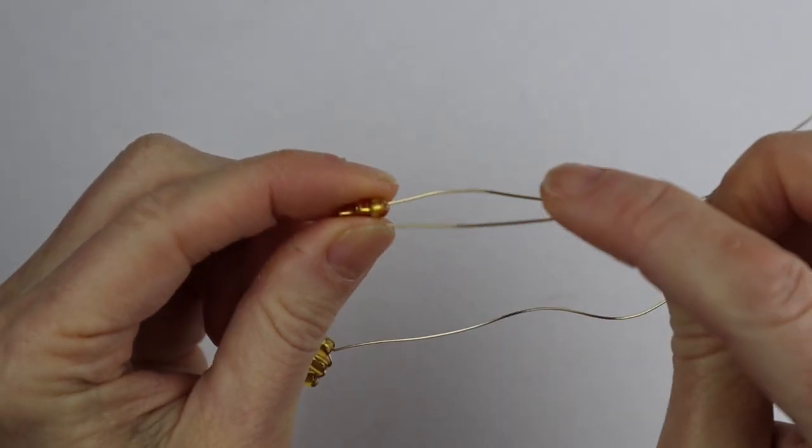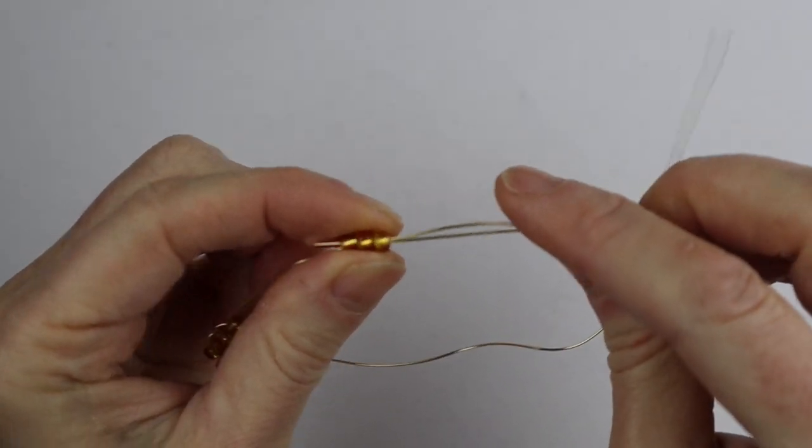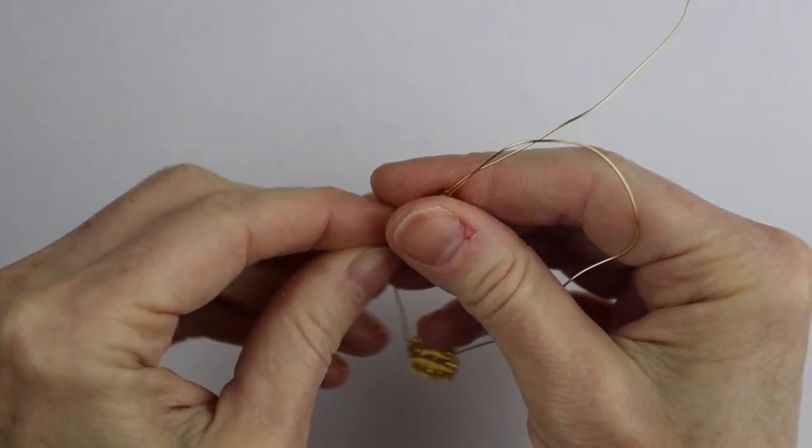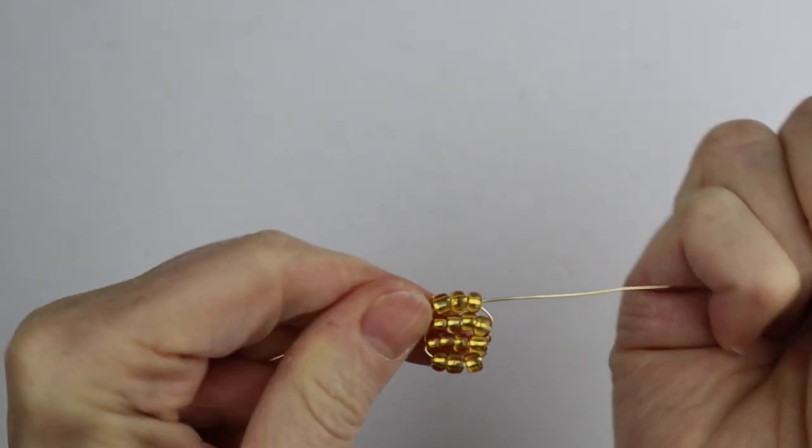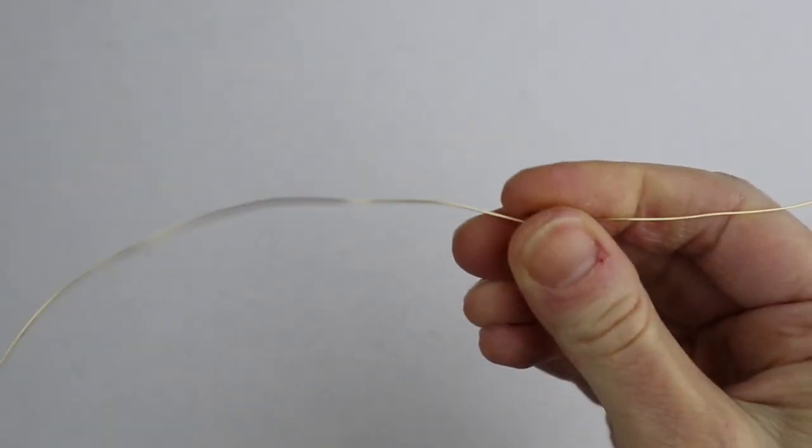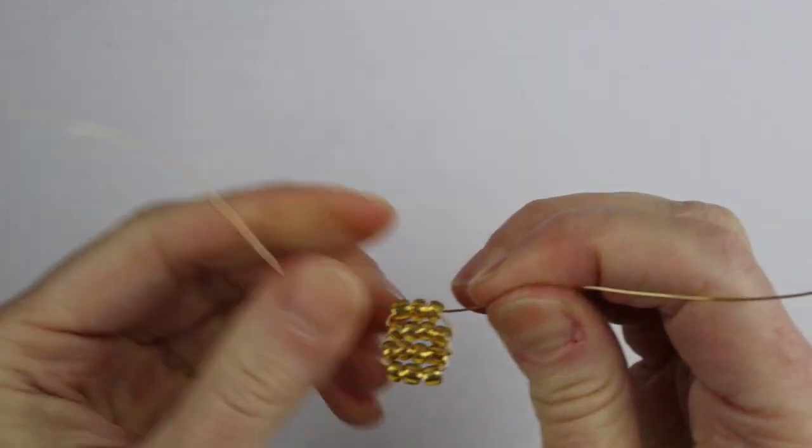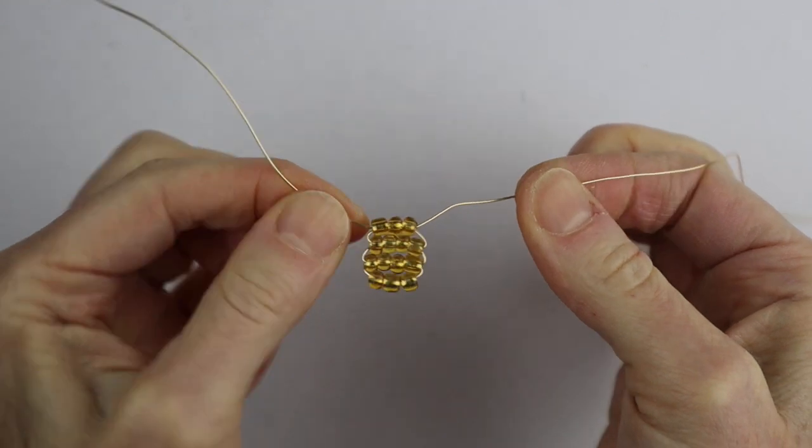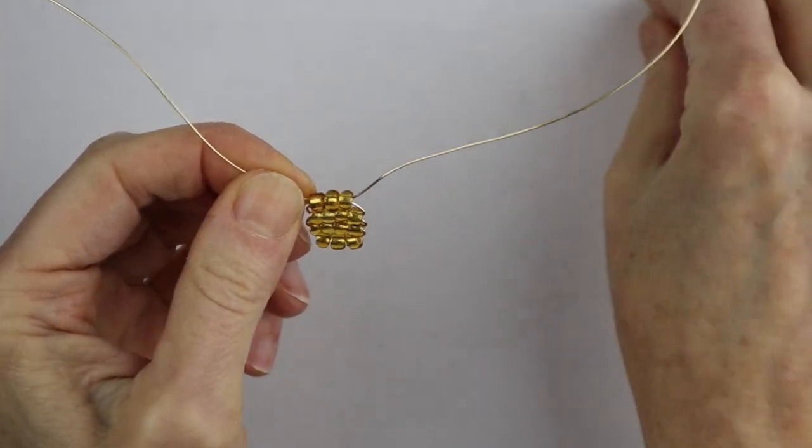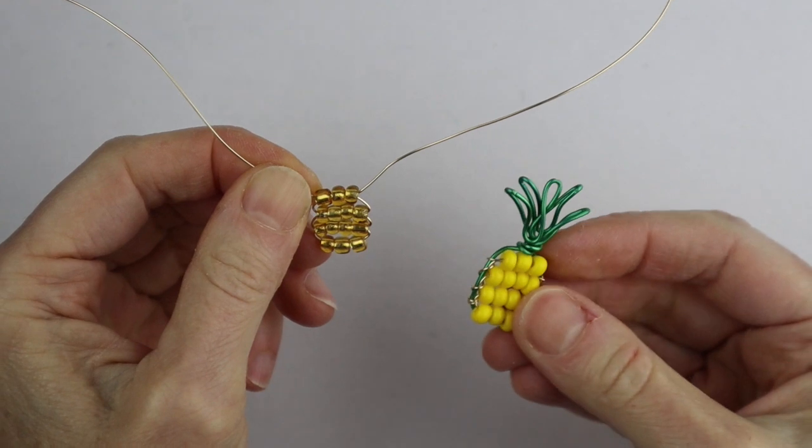We have our last row of three and we'll put the other wire back through there and pull it. I've cut this wire way too long - I cut it 18 inches but really you probably only need about 10 or less because it's pretty small. Here we have the basic shape for the pineapple.